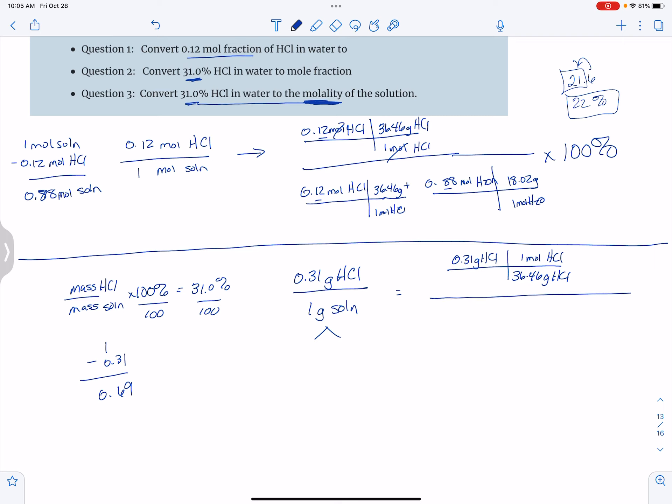For my bottom unit, I still have my 0.31 grams of HCl and my 0.69 grams of water, and I just have to get those into moles. So 36.46 grams of HCl in one mole, and then over here I have 18.02 grams of water in one mole.